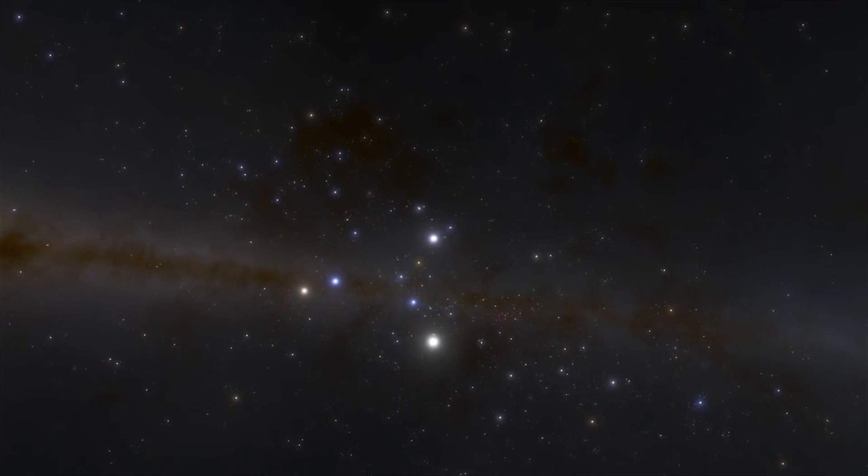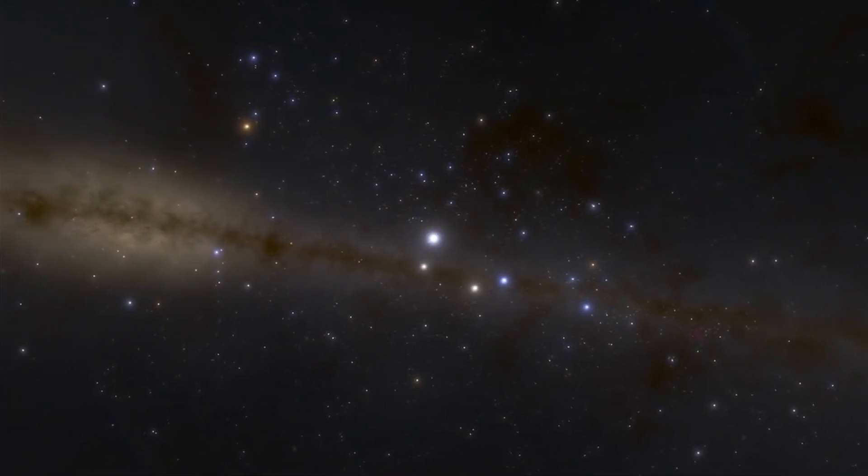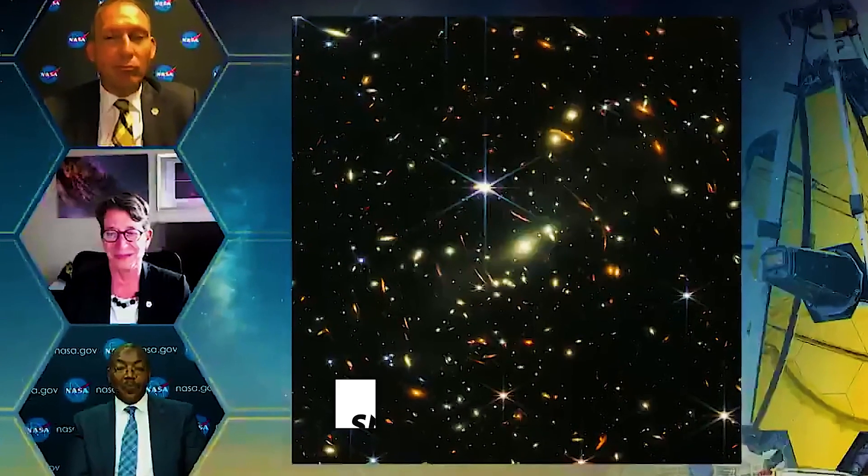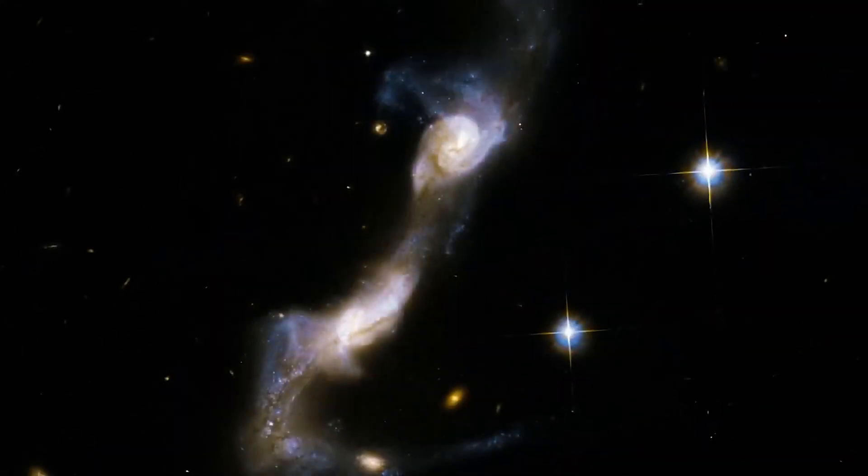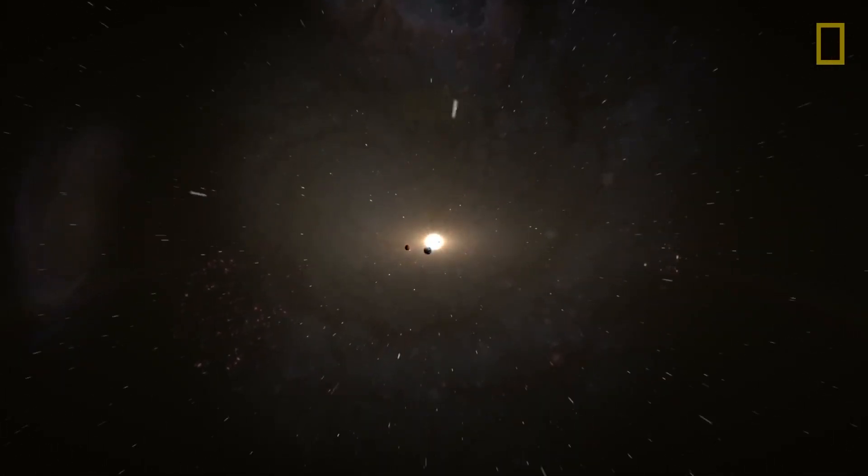The Webb Telescope is also investigating the atmospheres of planets, both within and outside our solar system. The first image from the telescope was unveiled by US President Joe Biden on July 11, 2022. It was a member of the galactic cluster SMACS 0723. This galaxy cluster formed 4.6 billion years ago.